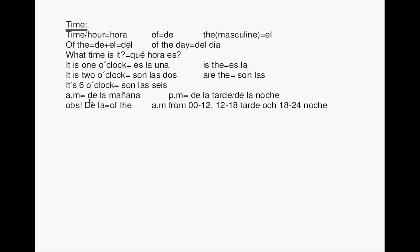For a.m. we say 'de la mañana,' for p.m. we say 'de la tarde' or 'de la noche.' A.m. is from midnight to 12 midday. From 12 midday until 18:00 is 'tarde,' and from 18:00 until 24:00 is 'noche.'